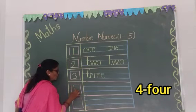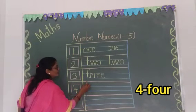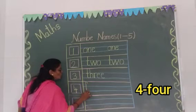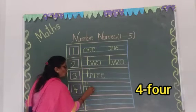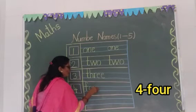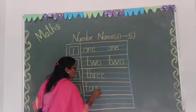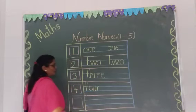Number 4. Once again, write down number 4. F, O, U, R. Four. Then, number 5.